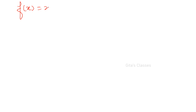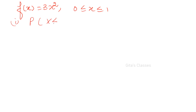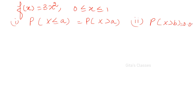One more question: let f(x) = 3x² for 0 ≤ x ≤ 1 be a probability density function of a continuous random variable. Determine a and b such that: Part (1): P(X ≤ a) = P(X > a), and Part (2): P(X > b) = 0.05.